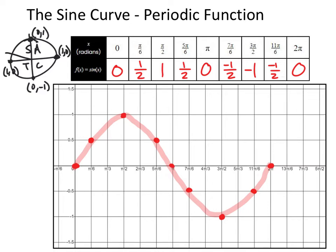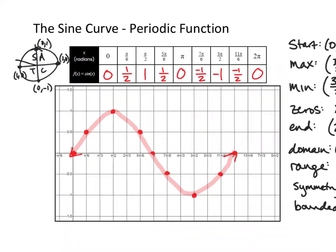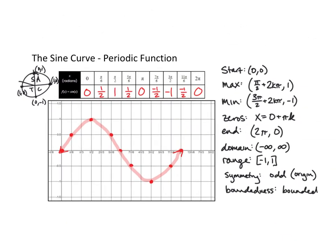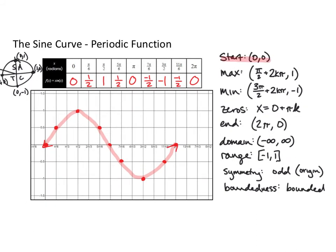The sine curve, if drawn on forever, has some qualities we can talk about. Probably the most important is that the start of this function is at 0, 0 — that's going to be very helpful to tell the difference between it and the cosine curve. Its maximum values occur at pi over 2 plus 2k pi — so at pi over 2, and then every 2 pi after that, there will be another maximum at y = 1.